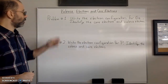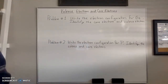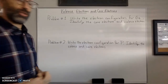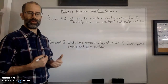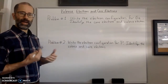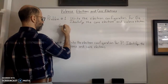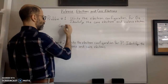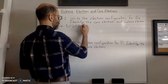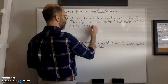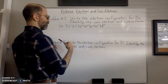In problem number one we're asked to write the electron configuration for germanium. We look it up in our periodic table and we're told that it has 32 electrons. We need to fill in the electrons according to the order of the sub levels and their energy. The electron configuration for germanium starts with 1s2, 2s2, 2p6, 3s2, 3p6, 4s2, and then 3d10.